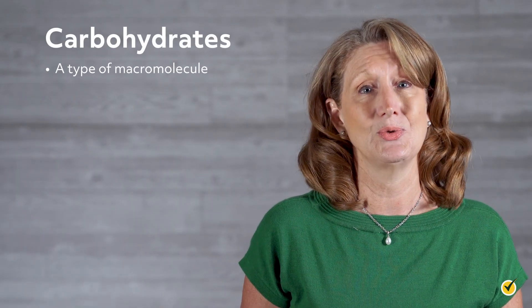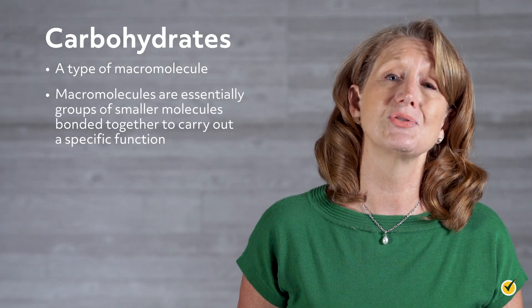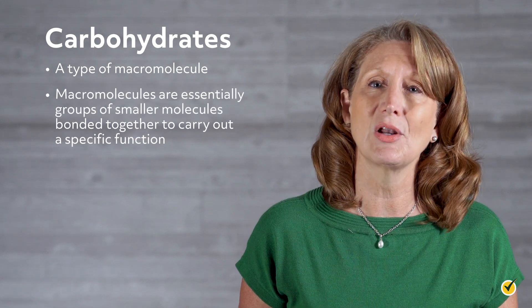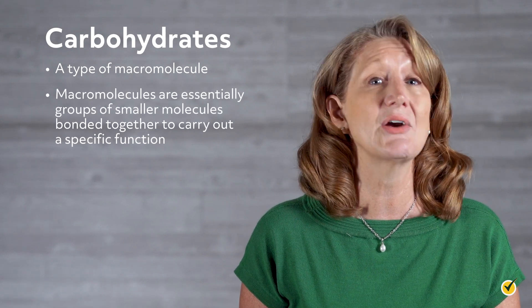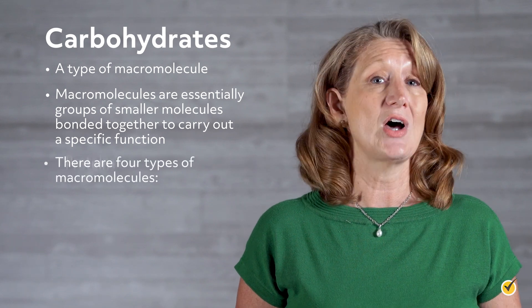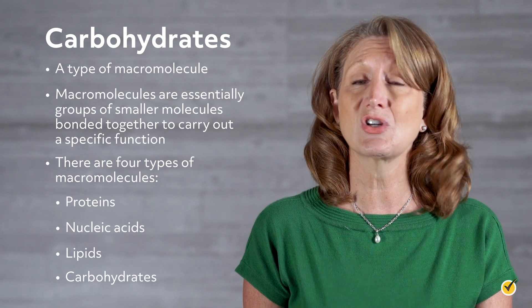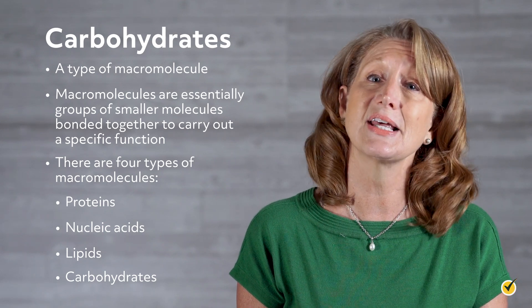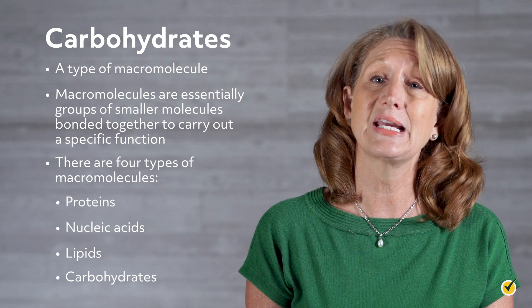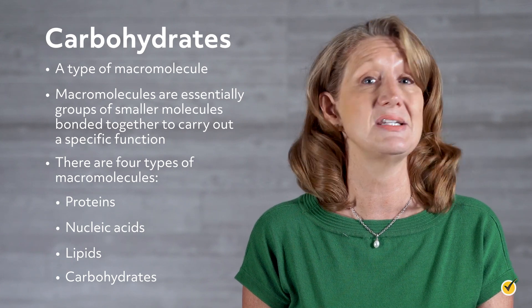So, what is a carbohydrate? It's actually a type of macromolecule. Macromolecules are essentially groups of smaller molecules bonded together to carry out a specific function. There are four types of macromolecules, all of which have specific structural and functional properties that allow them to work together to carry out different cellular processes within the body. Let's take a closer look at these structures and see how we can use them for classification.